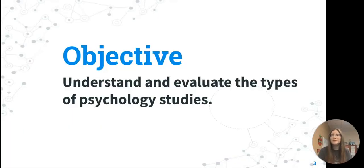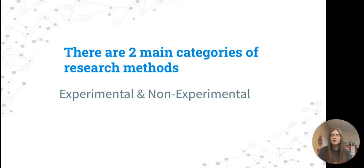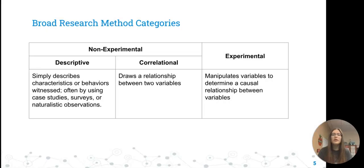Today we're going to try and understand and evaluate the different types of designs for psychological studies. There are two main categories: experimental and non-experimental. Non-experimental can be broken down further. With descriptive research, we're just going to describe the characteristics or behaviors that we are witnessing. This is often done in case studies, surveys, or naturalistic observations.